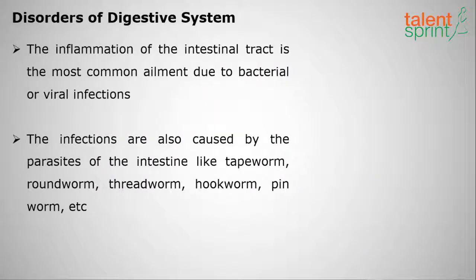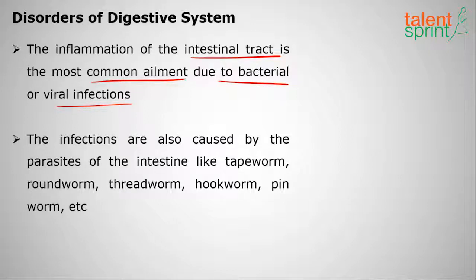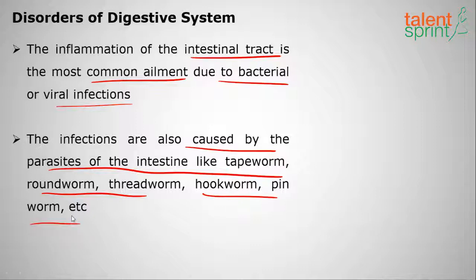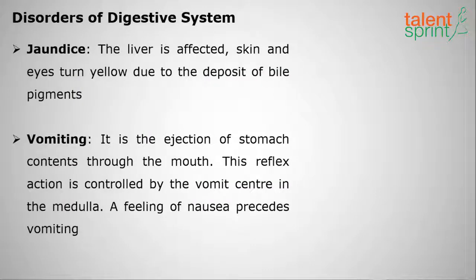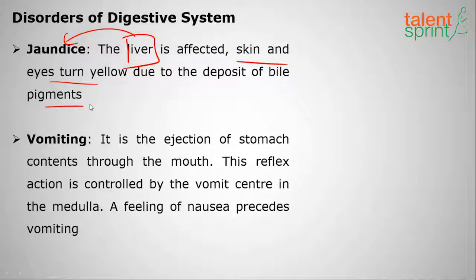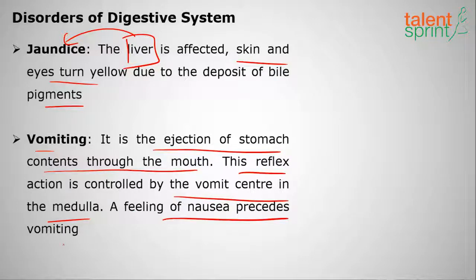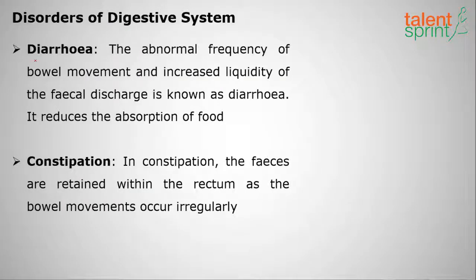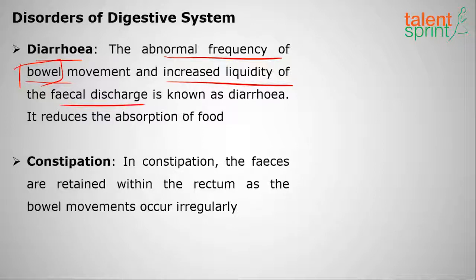The disorders of the digestive system include: inflammation of the intestinal tract, which is the most common ailment due to bacterial or viral infection. Infections are also caused by parasites of the intestine like tapeworm, roundworm, hookworm, and pinworm. Jaundice occurs when the liver is affected — skin and eyes turn yellow due to the deposit of bile pigments. Vomiting is the ejection of stomach contents through the mouth; this reflex action is controlled by the vomit center in the medulla of the brain. A feeling of nausea precedes vomiting.